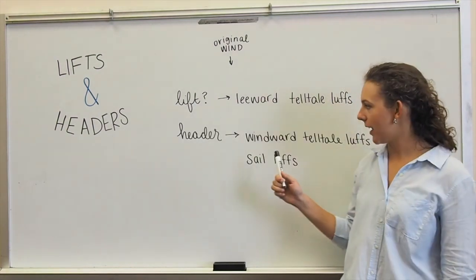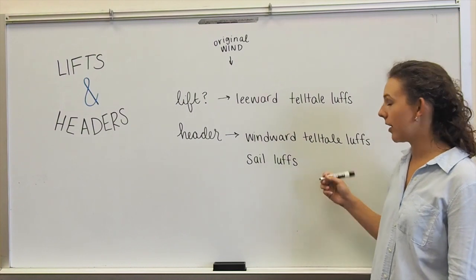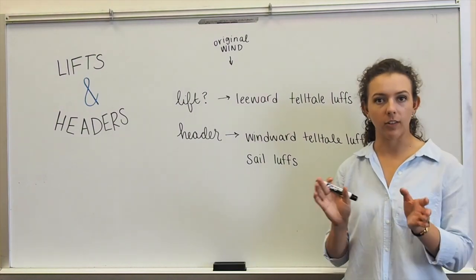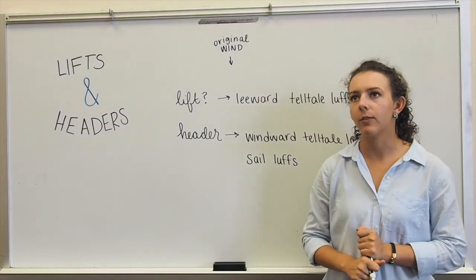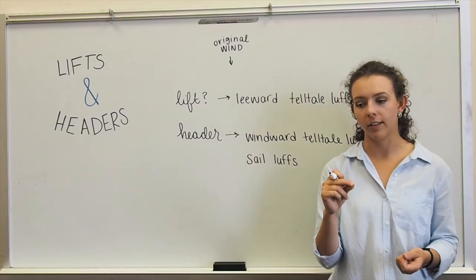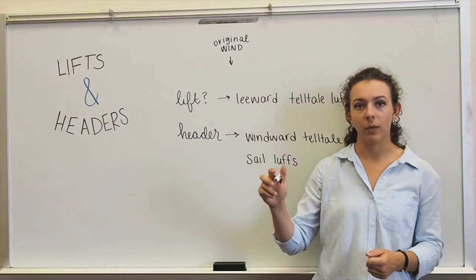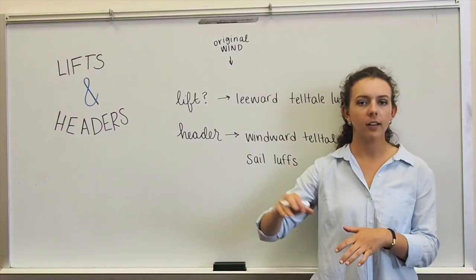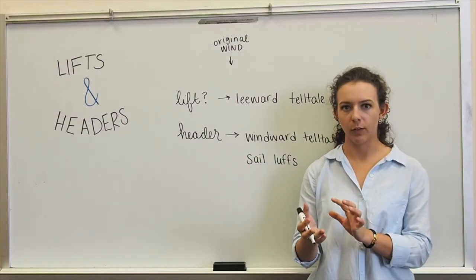So conversely, if you get a header, the windward telltale is going to luff if it's just a little bit of a header. In 420 and FJ sailing, the optimal telltale position is when the leeward telltale is flying straight back, and when the windward telltale is up just a little bit, so when you're just kind of on the verge of pinching.